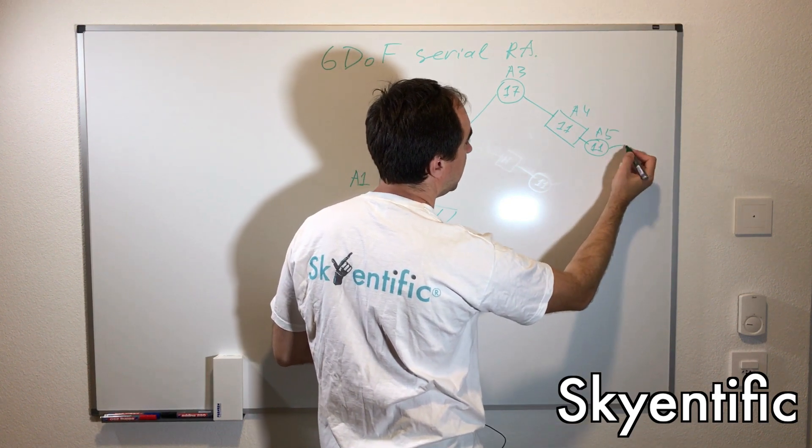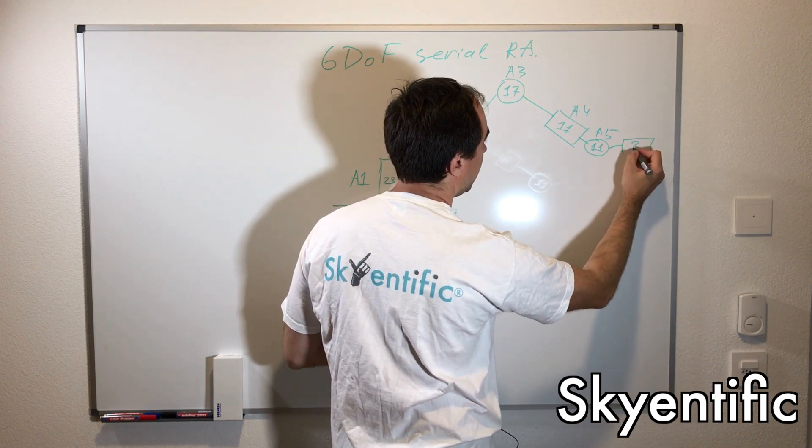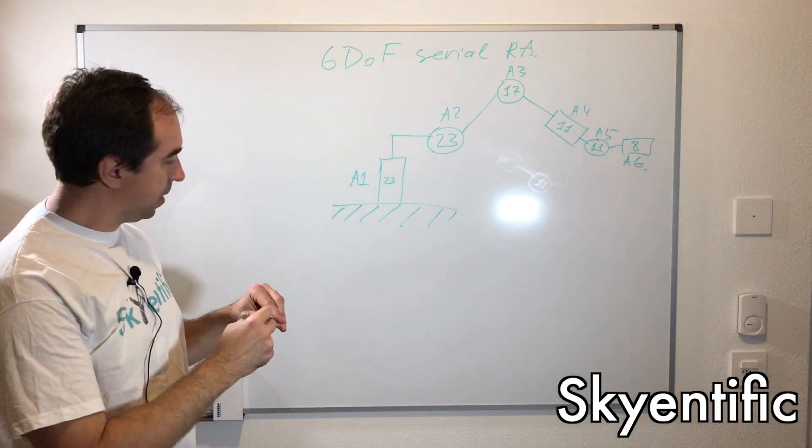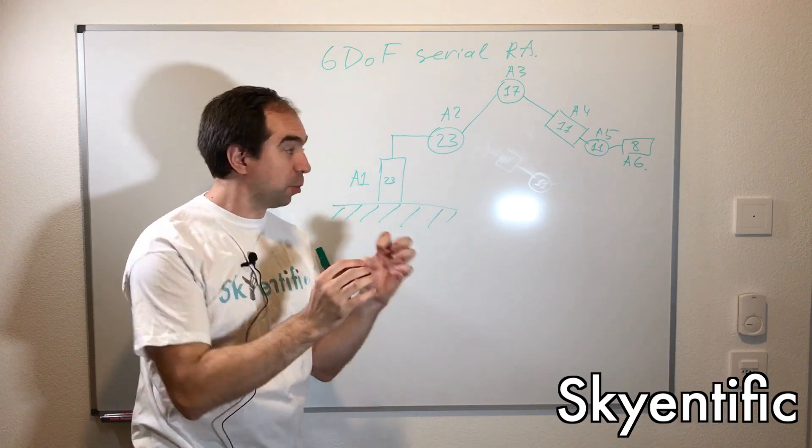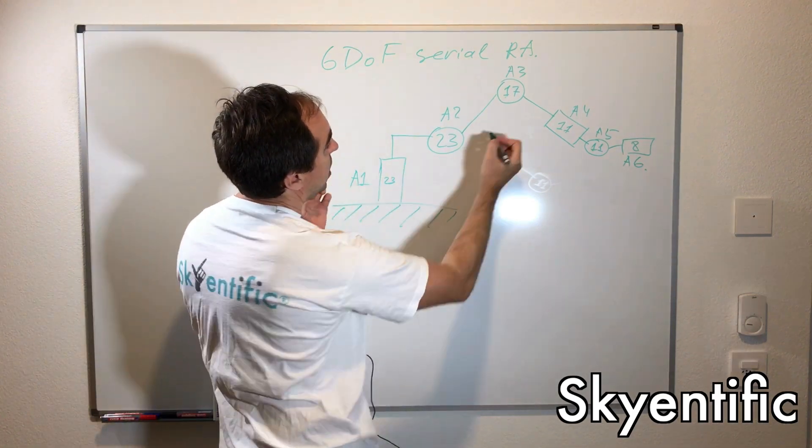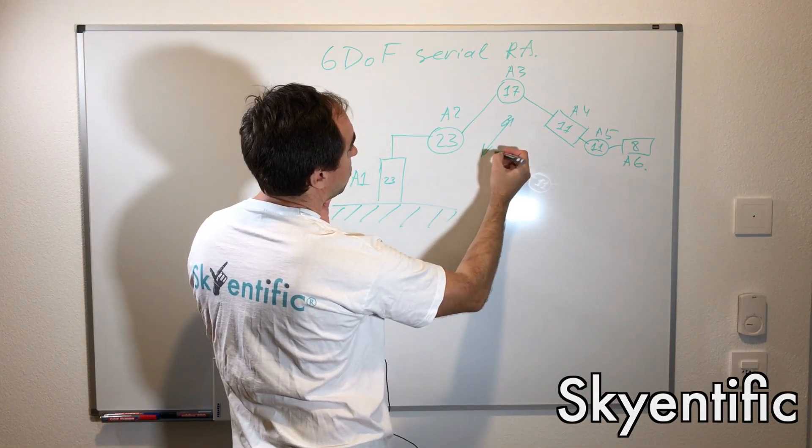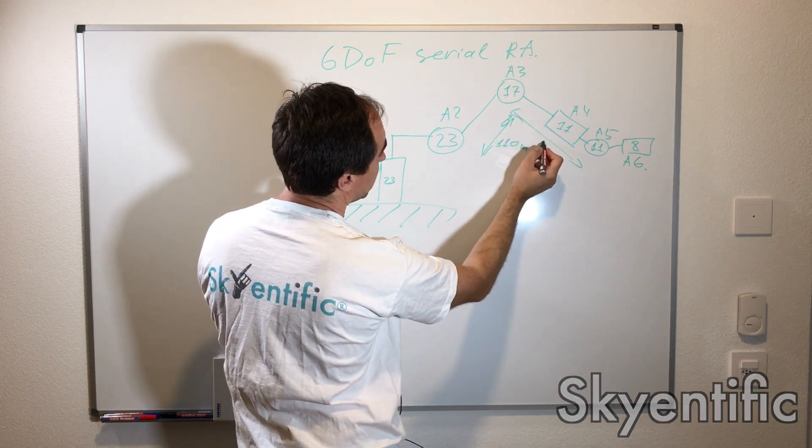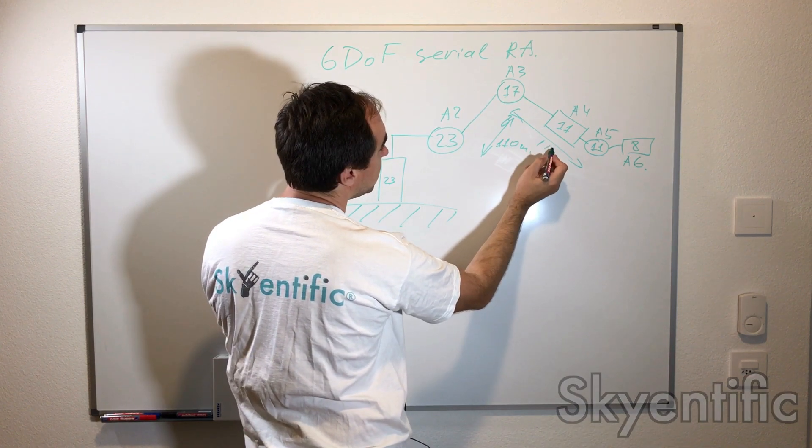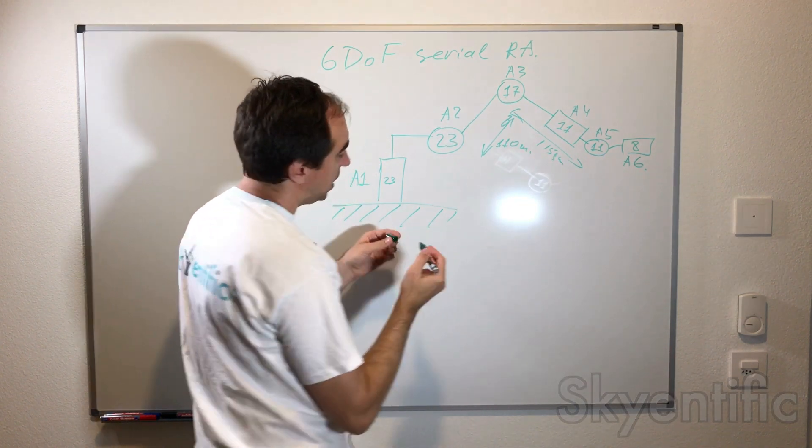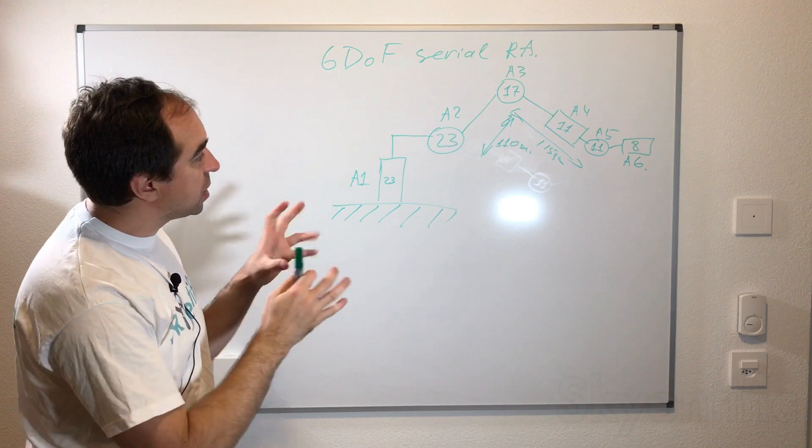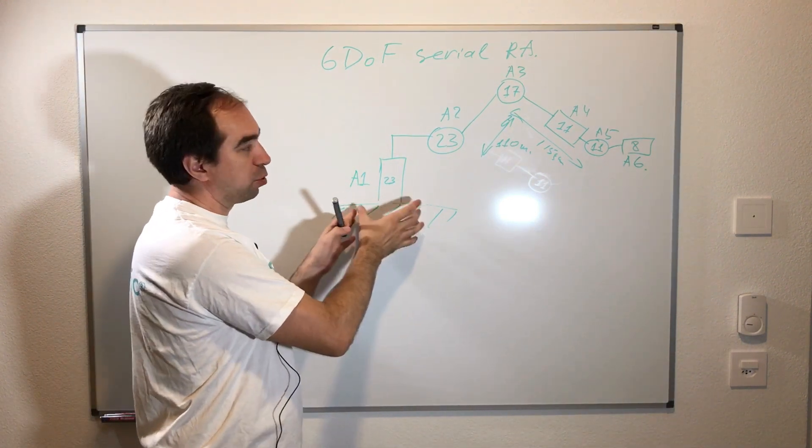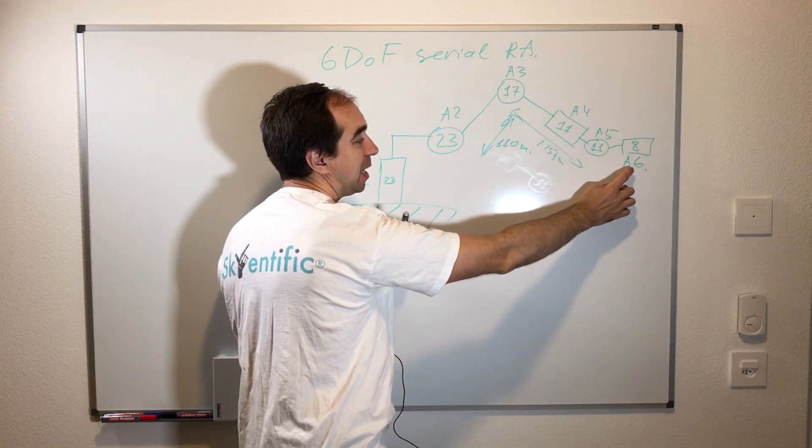Afterwards NEMA 11, NEMA 11, so this is axis 4, axis 5, and NEMA 8 for the last axis 6. This link is approximately 110 millimeters and this also is approximately 115 millimeters, so it's really small. The idea was to keep heavy and powerful motors close to the base and light and less powerful motors on the wrist of the robot.